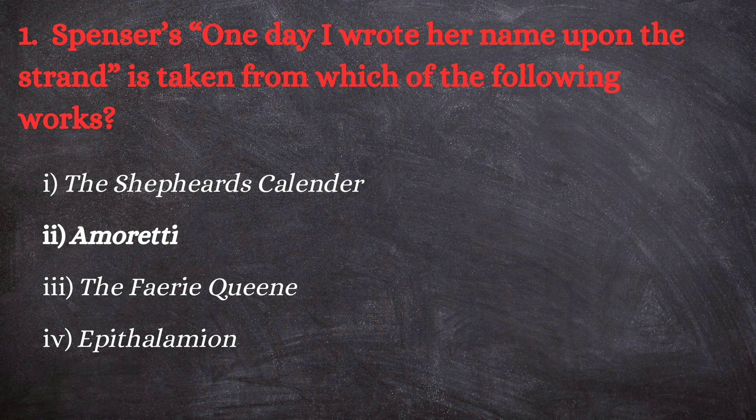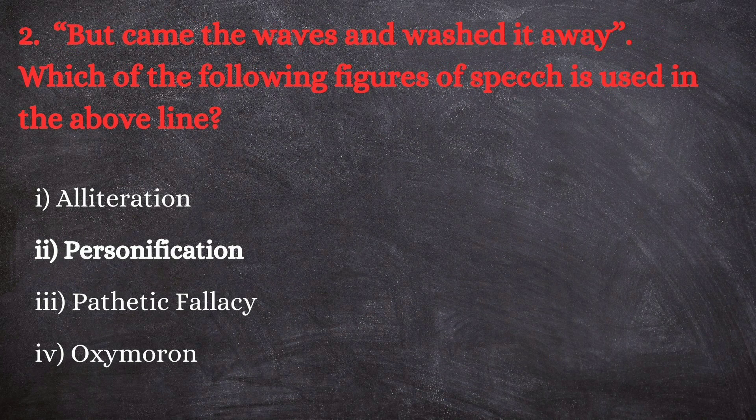'One day I wrote her name upon the strand' is the 75th sonnet in this collection called Amoretti. Next question: 'But came the waves and washed it away' — which of the following figures of speech is used in the above line?